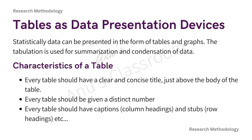Every table should also be given a distinct number. When preparing project reports, you will have a list of tables — for example, Table 1.1 with its title and page number — and no two tables will share the same number. Every table should also have captions, which are column headings, and stubs or row headings. Wherever possible, units of measurement must be indicated, usually alongside the column heading. Abbreviations should be used to the minimum possible extent, and tables should be logical, clear, accurate, and simple.